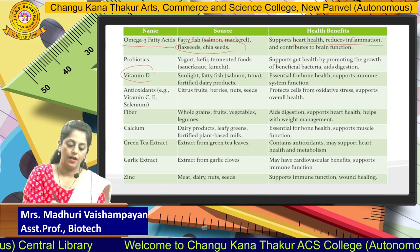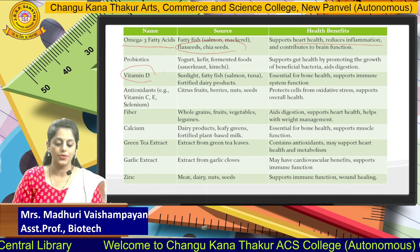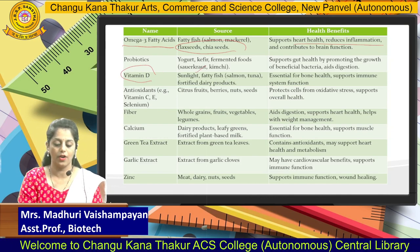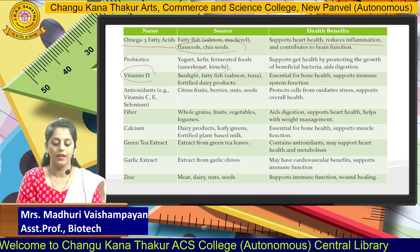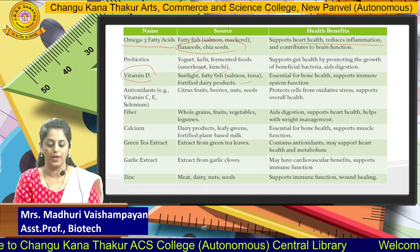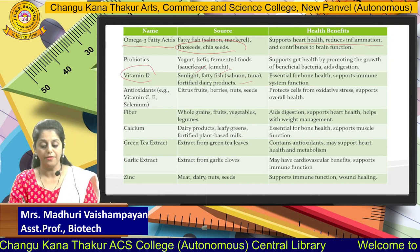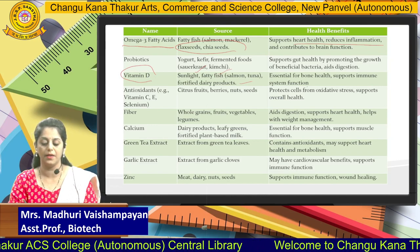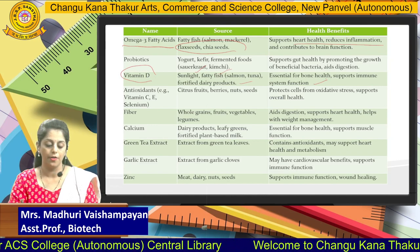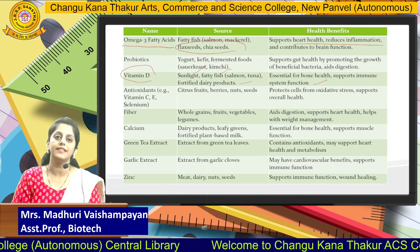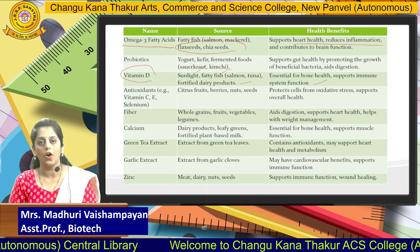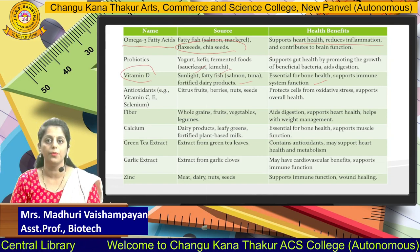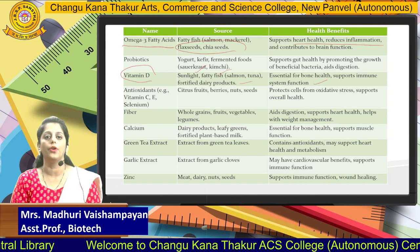Vitamin D — the main source of vitamin D is sunlight, fatty fish, and fortified dairy products, which are required for bone health as well as immune system functions. These are examples of nutraceuticals which you can consume to improve your health.